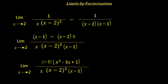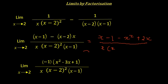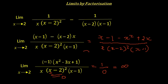Further simplification gives -(x² - 3x + 1) in the numerator. However, in the denominator we still have an (x - 2) term. If we substitute x = 2, the denominator becomes 0, which means the limit continues to be 1/0 — which is infinity. Hence the limit in this case is infinity, which looking at the original expression would already tell you.